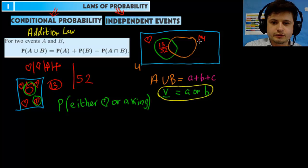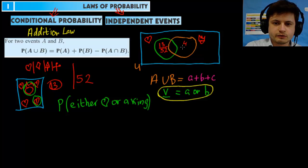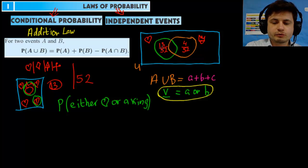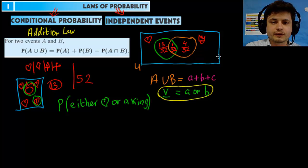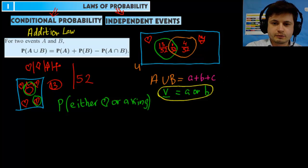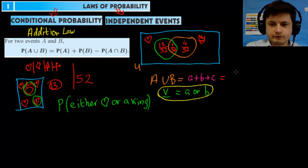What about the probability of getting a king? There are four kings in 52 cards, so that's 4 out of 52. The middle part — the intersection — is the probability of getting the king of hearts. There's only one king of hearts, so that's 1 out of 52. Using the old method, combining all three areas gives us 13 plus 1 plus 4 divided by 52, which is 18 out of 52.